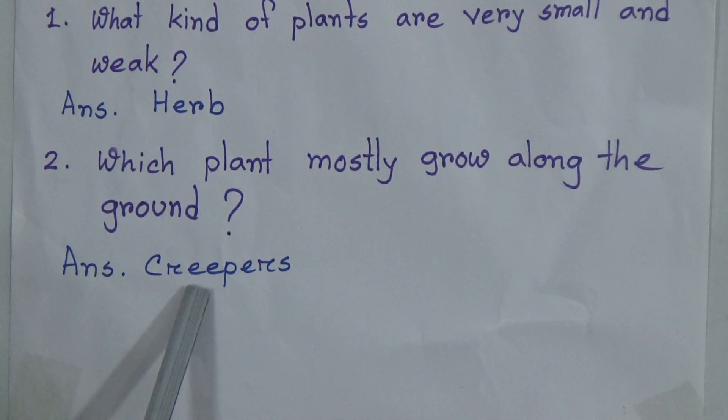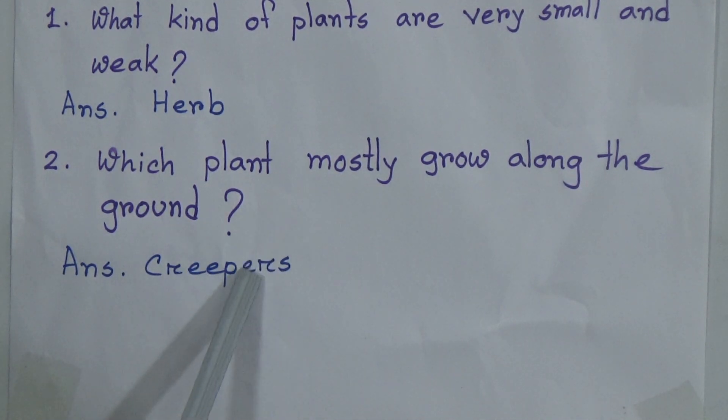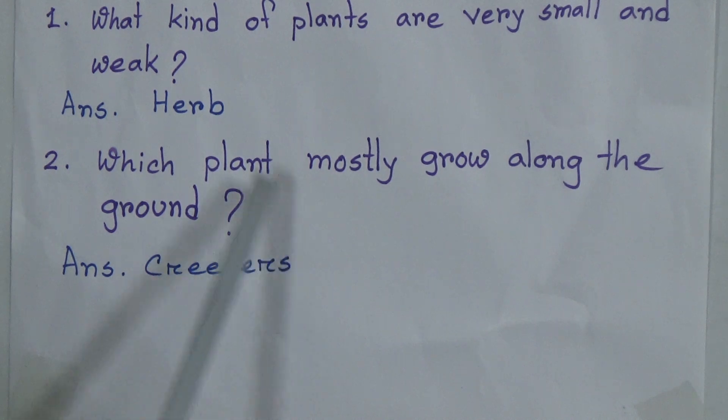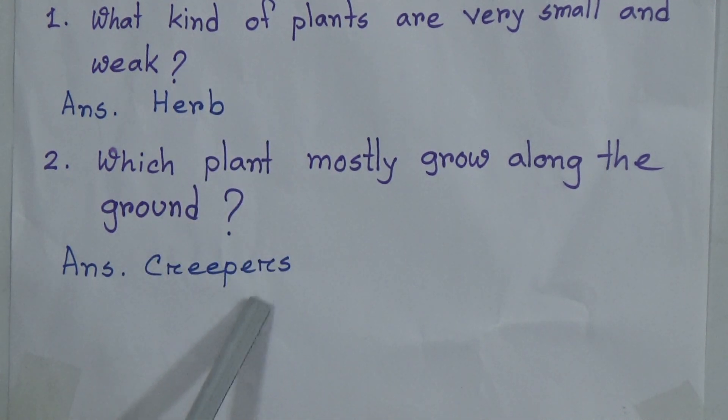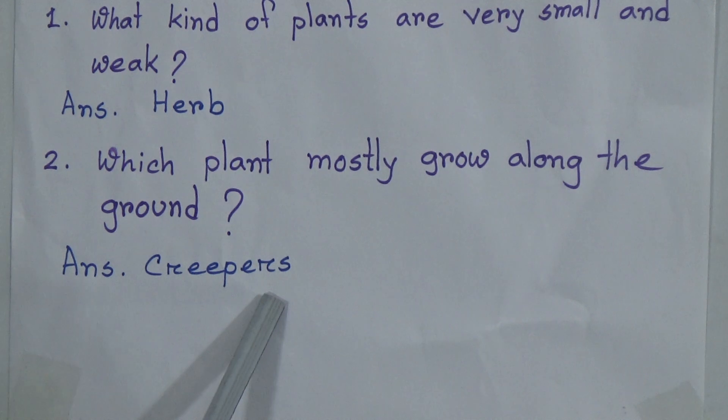Second one-word answer: which plants mostly grow along the ground? The answer is creepers. Remember, after the one-word answer and after the word meaning, there will be no full stop.